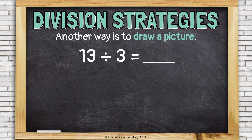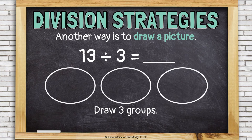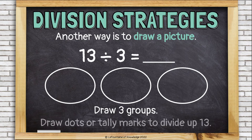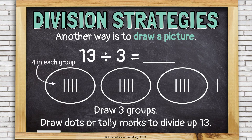We can also use a picture, just like we did without a remainder — same strategy. Draw 3 groups and start dividing up your 13 dots or tally marks, counting each one out: 1, 2, 3, 4, 5, 6, 7, 8, 9, 10, 11, 12 — and 13 goes off to the side. Now I see my answer: I have 4 in each group and 1 left over. So 4 remainder 1.